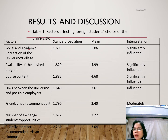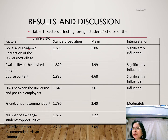Table 1 shows the factors affecting foreign students' choice of university. Most foreign student participants cited the social and economic academic reputation of the university or college as a significant influential factor affecting their choice of university, with a mean score of 5.06. The availability of the desired program with a mean score of 4.99 and course content with a mean score of 4.68 are also significantly influential factors in the choice of university.